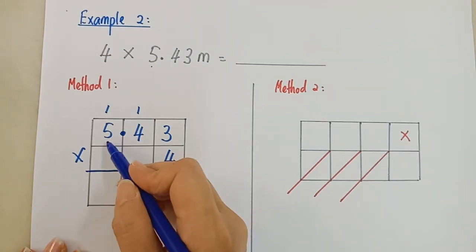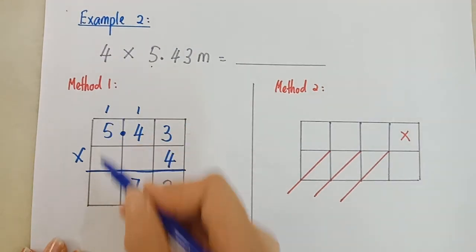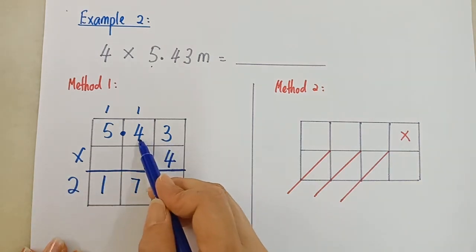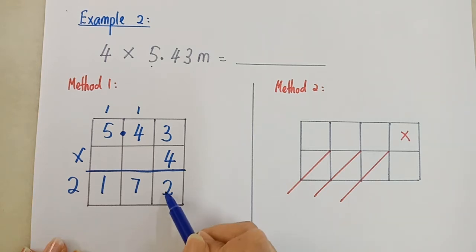4 times 5, 20. 1, 2. 2 tempat perpuluhan. So jawapan pun sama. 1, 2. Point dekat sini.